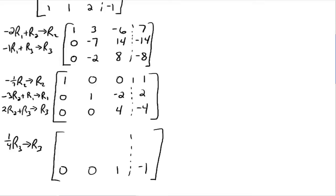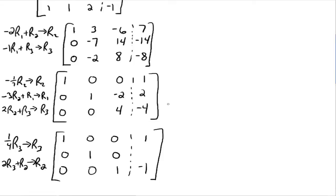Notice we already have a zero in row one where we want it, so row one is not changing. But we need to get the negative two in row two to zero. Two times row three plus row two gives a new row two. Two times zero plus zero equals zero. Two times zero plus one equals one. Two times one plus negative two equals zero. Two times negative one plus two equals zero. We're done with all columns, so read off the solutions: x equals one, y equals zero, z equals negative one.